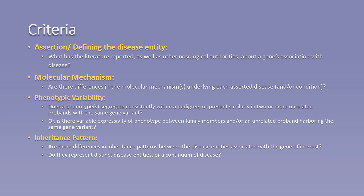They include assertion: what have nosological and ontological authorities reported about a gene's relationship with disease, as well as primary literature? Molecular mechanism: are there differences in molecular mechanism underlying each asserted entity? The difference in molecular mechanism should be assessed initially at the gene level, if possible, before the protein and physiological levels.